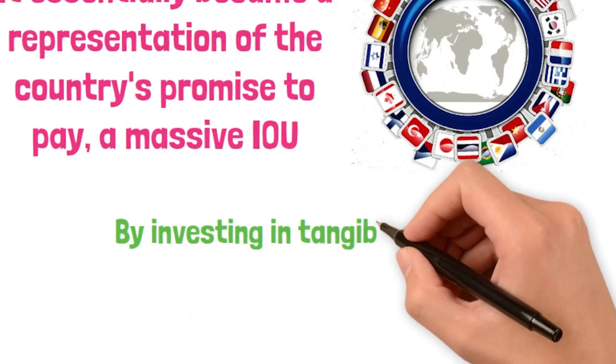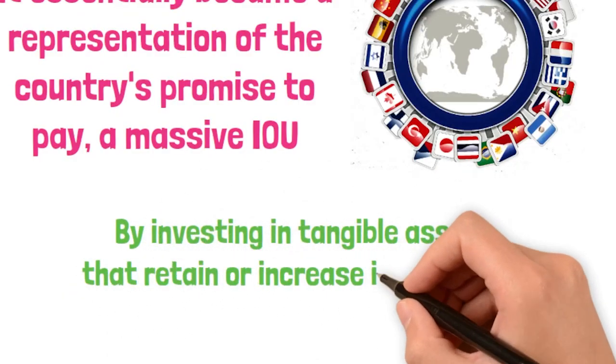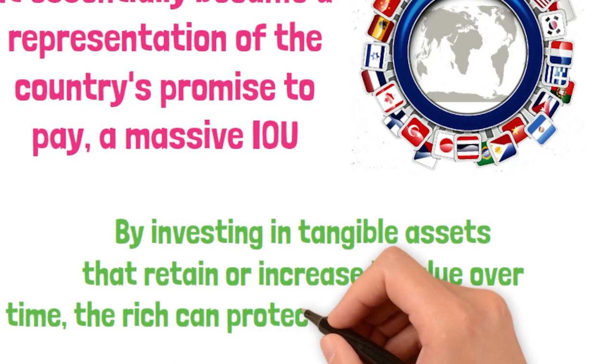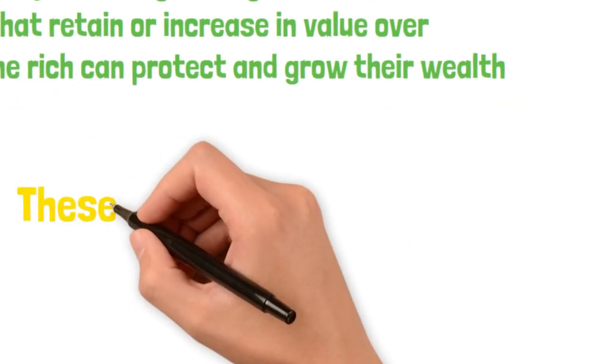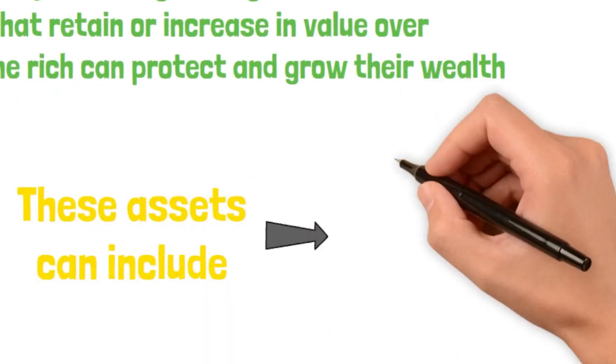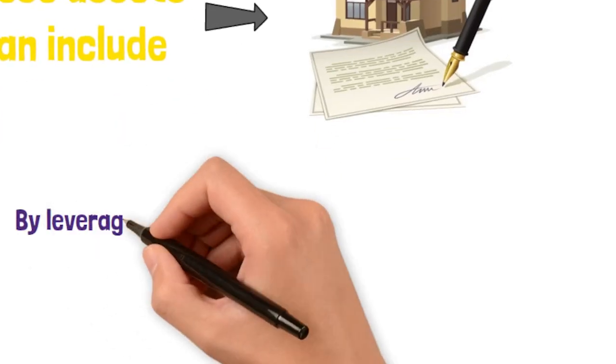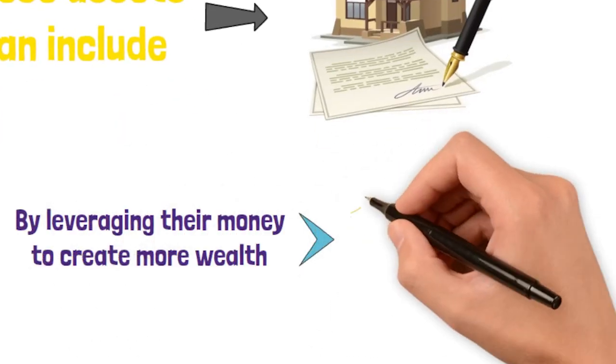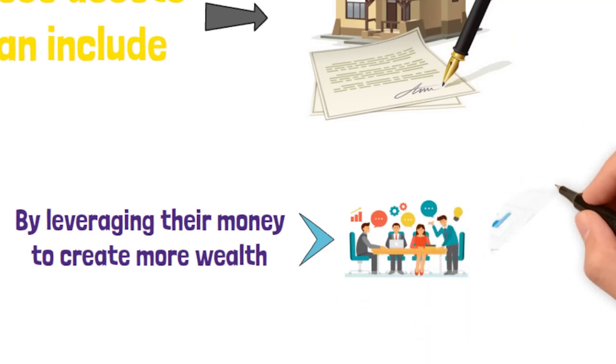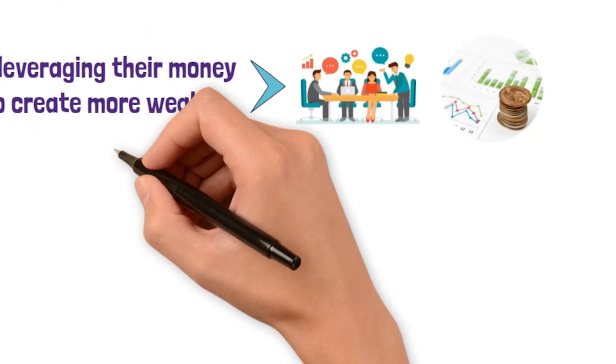By investing in tangible assets that retain or increase in value over time, the rich can protect and grow their wealth. These assets can include real estate, stocks, businesses, and other income-generating ventures. By leveraging their money to create more wealth, they can escape the cycle of living paycheck to paycheck and secure a brighter financial future.